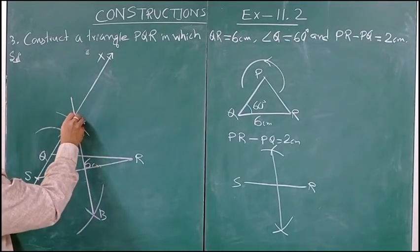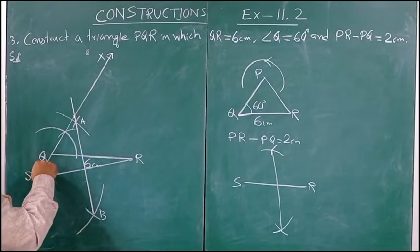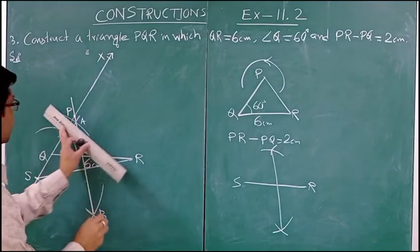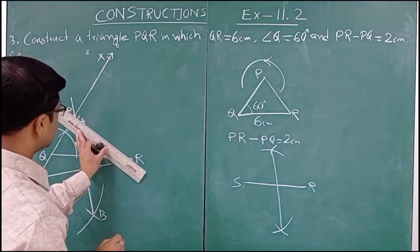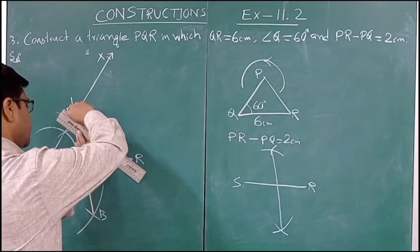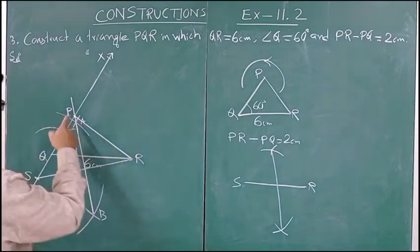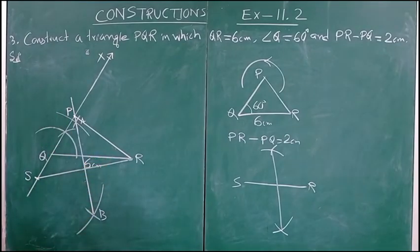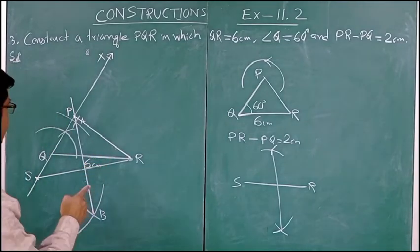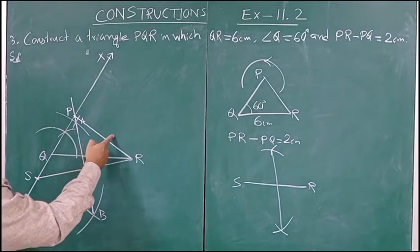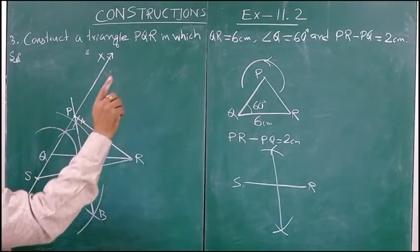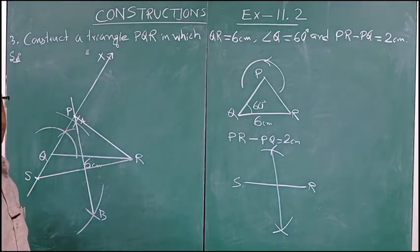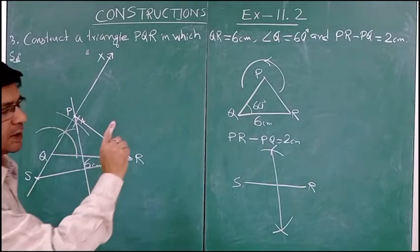This perpendicular bisector AB intersects QX at a point — let that point be P. Now let us join PR. Triangle PQR is our required triangle. We shall verify that PR minus PQ equals 2 centimeter. Now let us see the justification.